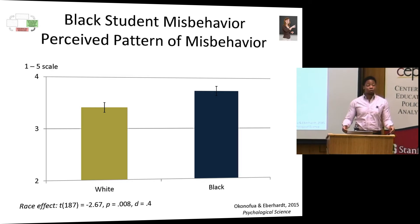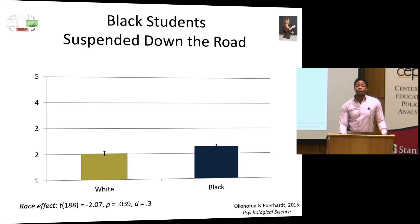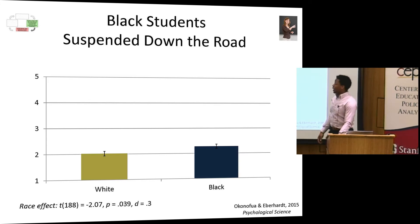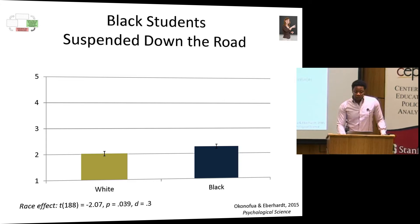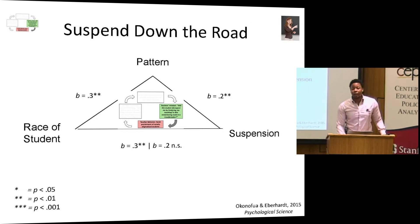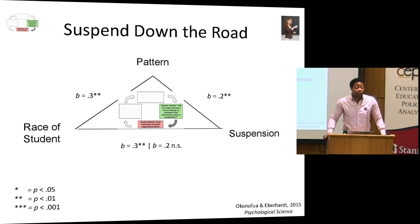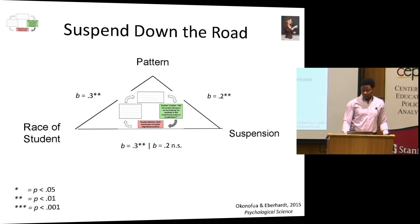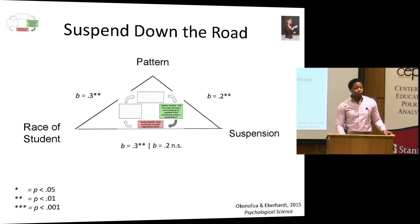I also asked teachers how likely they would be to suspend the child down the road. These bars are low because there were minor infractions, but even at this low level, they are significantly more likely to think they'll suspend the student if the student was black compared to white. In our mediation analysis, the blackness of a child — and I use that word on purpose because we could also look at a continuous variable of how black participants thought the child was — communicated that this is a pattern of misbehavior, which in turn led them to be more likely to discipline severely and see themselves suspending the child.